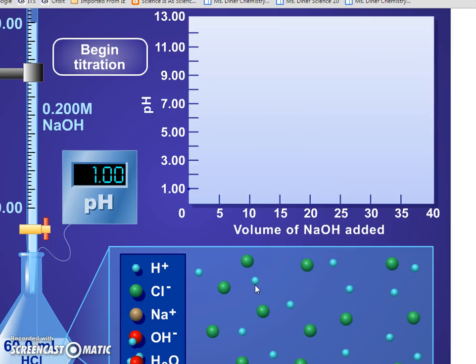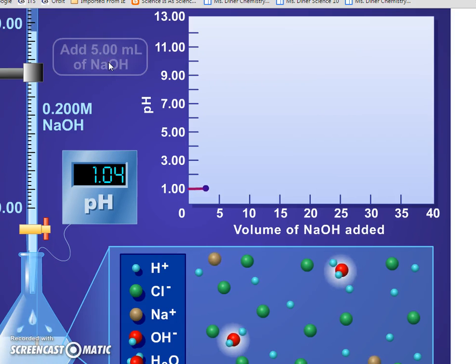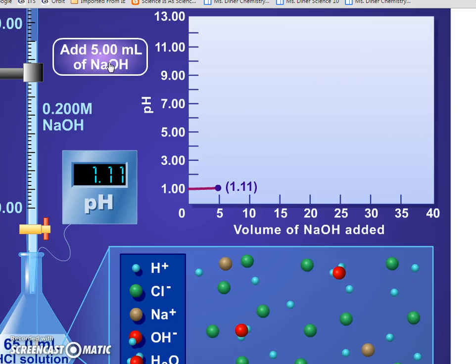I'm going to begin the titration and add five milliliters of sodium hydroxide at a time. As we add it in, the sodium hydroxide (represented by red and blue) picks up the hydrogen ions and forms water. Now we have water in our molecular diagram, but notice what's really affecting the pH is just the presence of hydrogen ion. There is no free hydroxide, so the pH in the first five milliliters hardly changed at all.